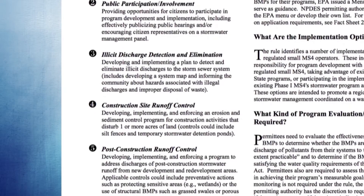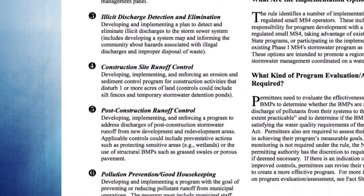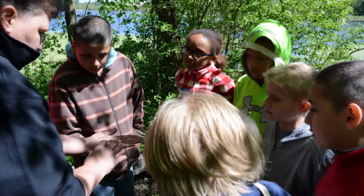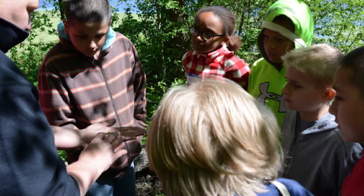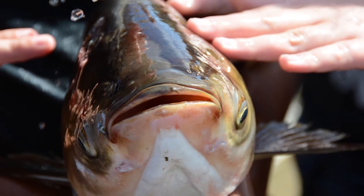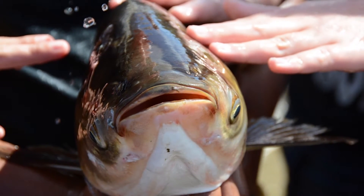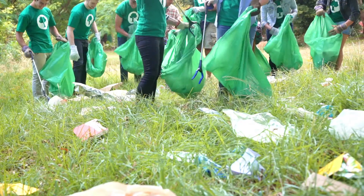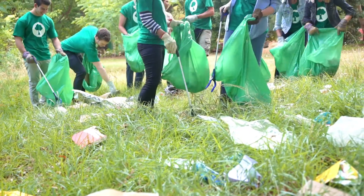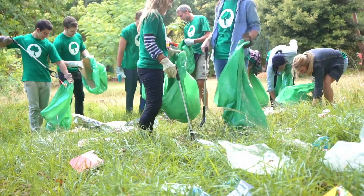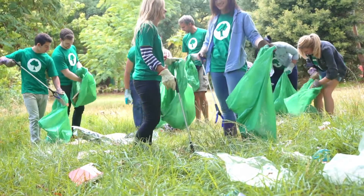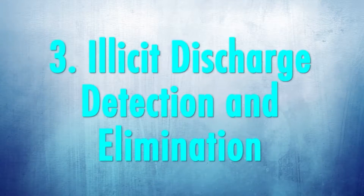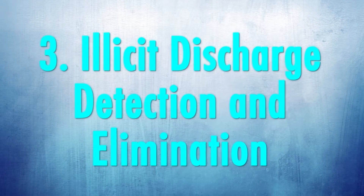The first program area is public education and outreach, to educate residents, businesses, and others on their role in helping to keep pollutants out of stormwater. The second is public participation and involvement — a great opportunity to get your residents involved in local stormwater activities such as storm drain marking and trash cleanups.